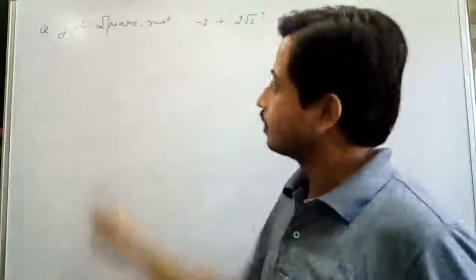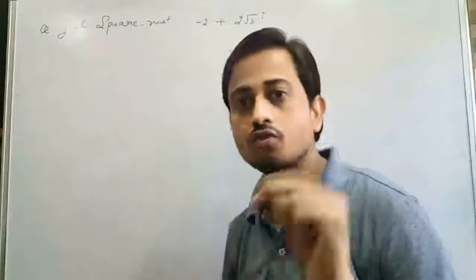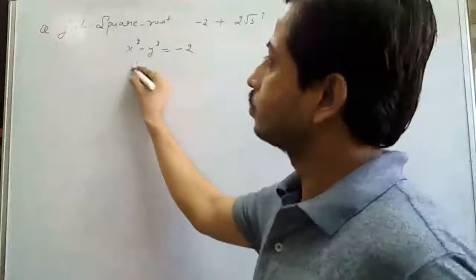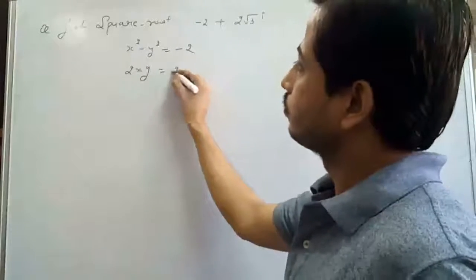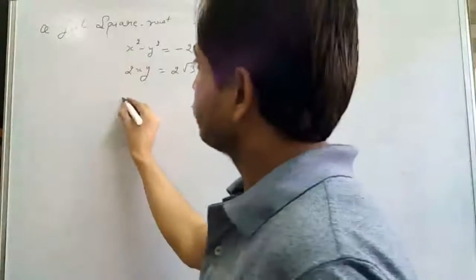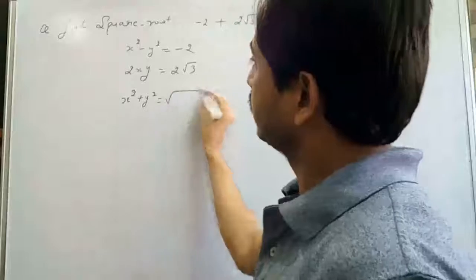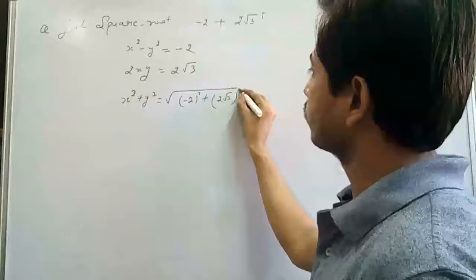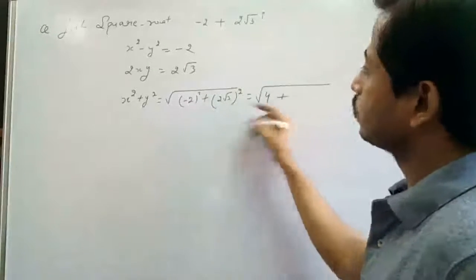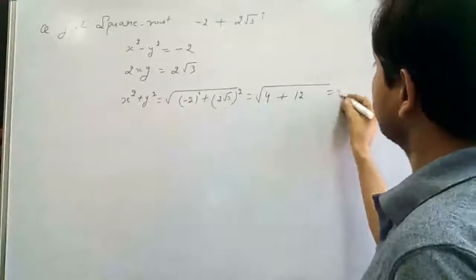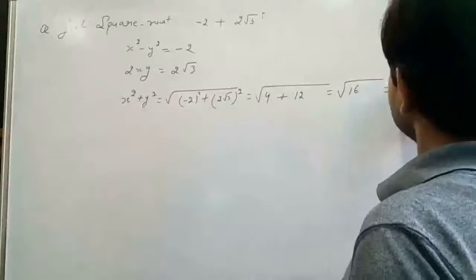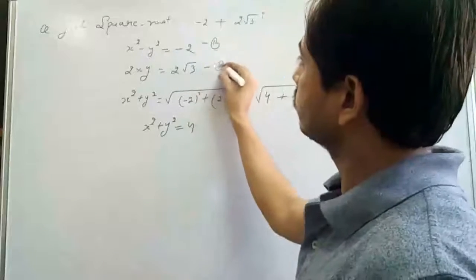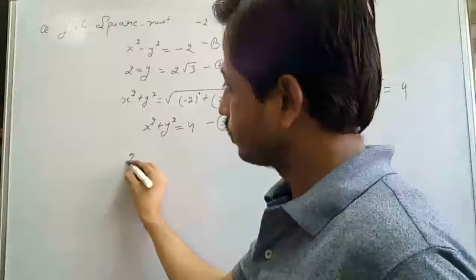Now let's take another example: find the square root of negative 2 plus 2√3 iota. First step: X² minus Y² equals the real part, which is negative 2. Second step: 2XY equals the imaginary part, which is 2√3. Third step: X² plus Y² equals √((−2)² + (2√3)²) equals √(4 + 12) equals √16 equals 4.